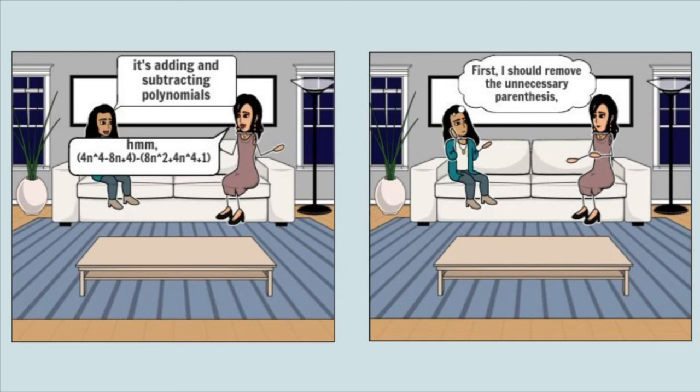Her mother replied, '(4n⁴ − 8n + 4) − (8n² + 4n⁴ + 1).' Mizna started to think: 'First, I should remove the unnecessary parentheses.'